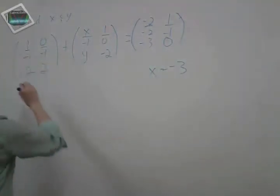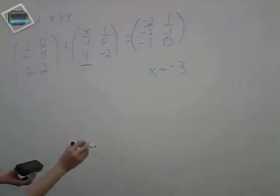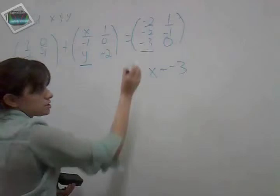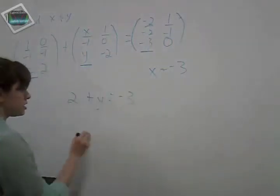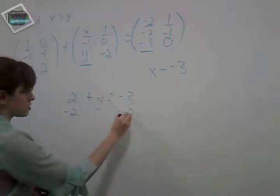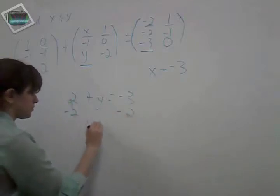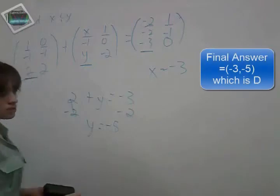Now we'll do the same thing for Y. Y is here. The corresponding value over here is 2. The corresponding value over here is negative 3. 2 plus Y is equal to negative 3. Again, you just solve for Y. Y is equal to negative 5. So there's the answer.